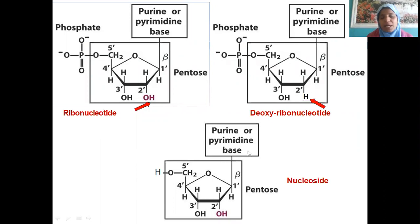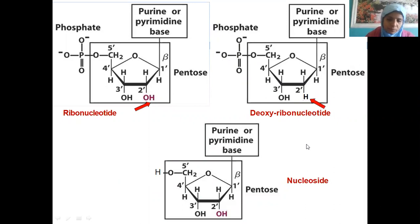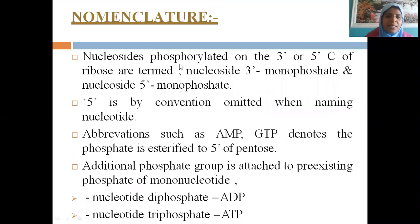At the first carbon, the nitrogen base is attached — it can be a purine. If it is adenine with one phosphate, it is AMP; if two phosphates, ADP; and so on — CTP for cytidine triphosphate. Nucleosides are phosphorylated on the third or fifth carbon of ribose and termed nucleoside 3-monophosphate or nucleoside 5-monophosphate. By convention, the 5 is omitted when naming nucleotides.